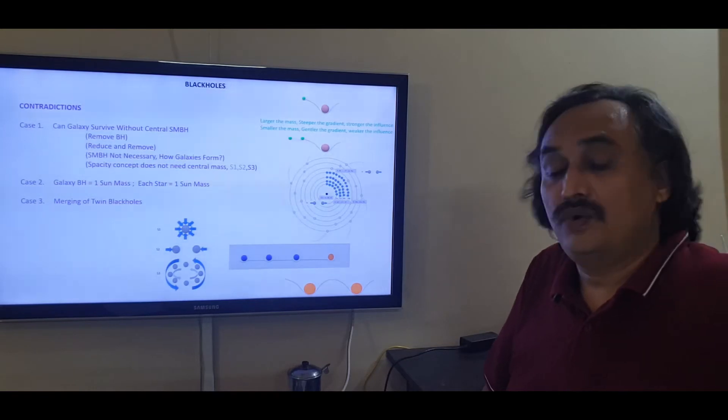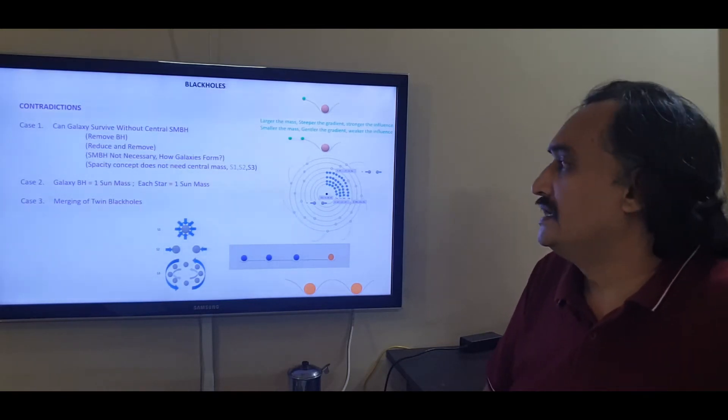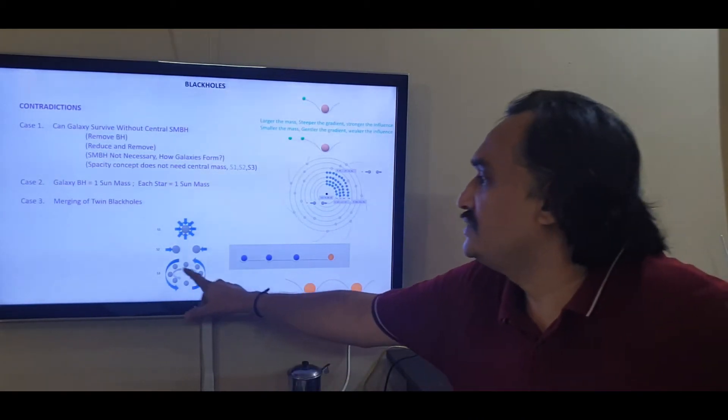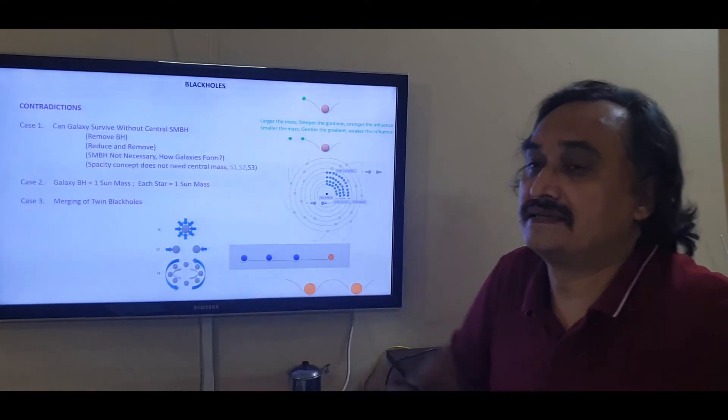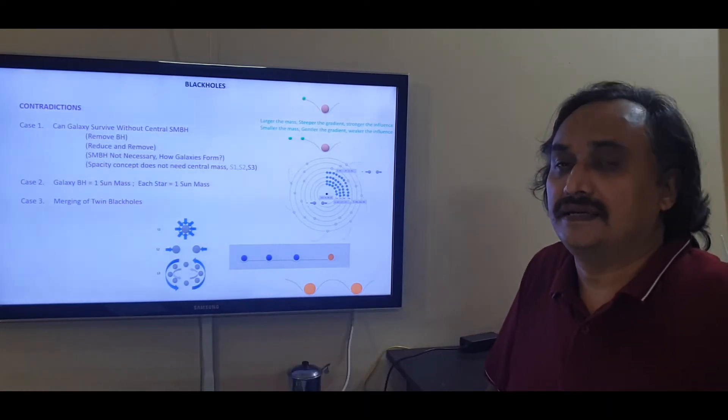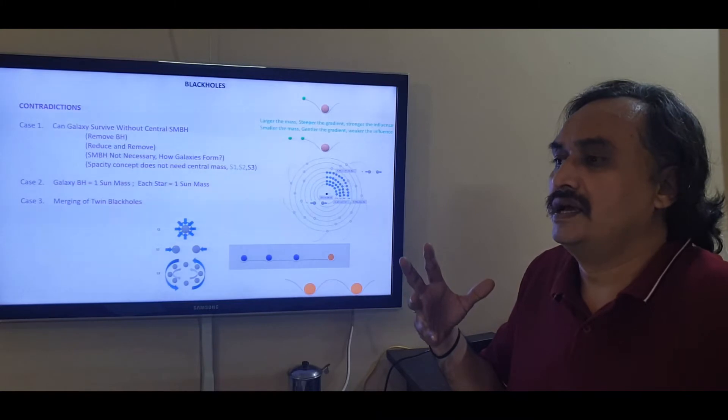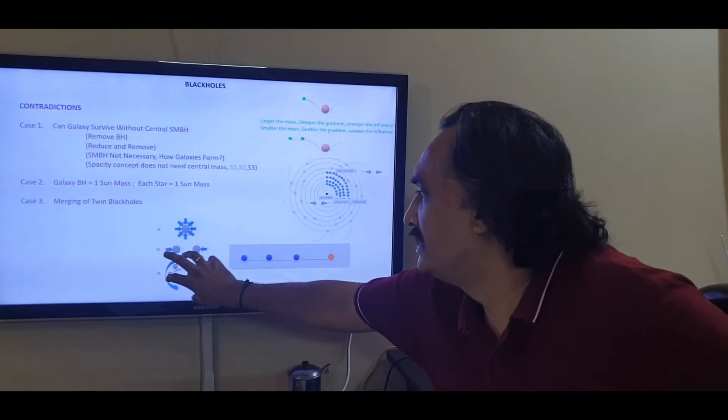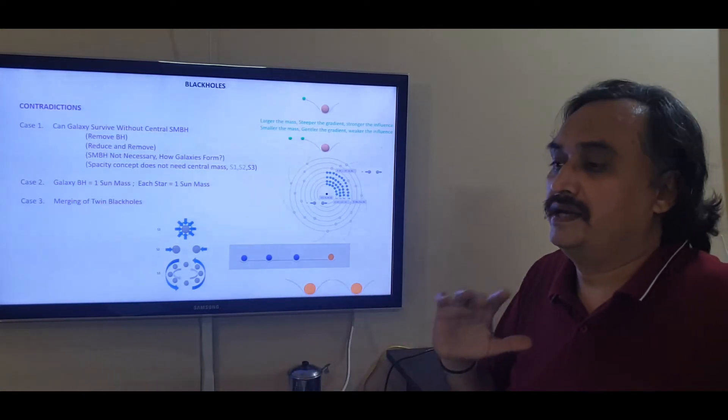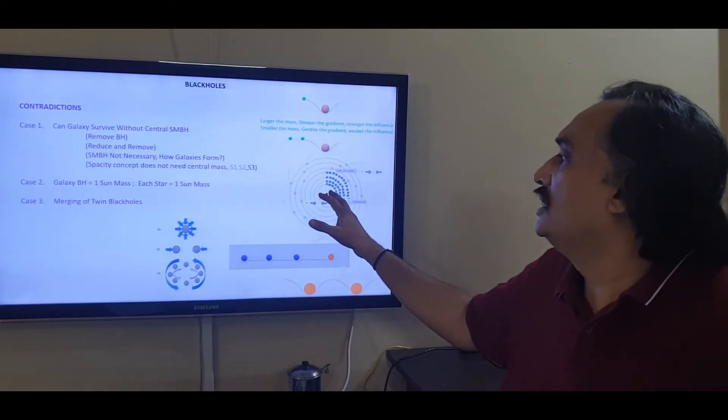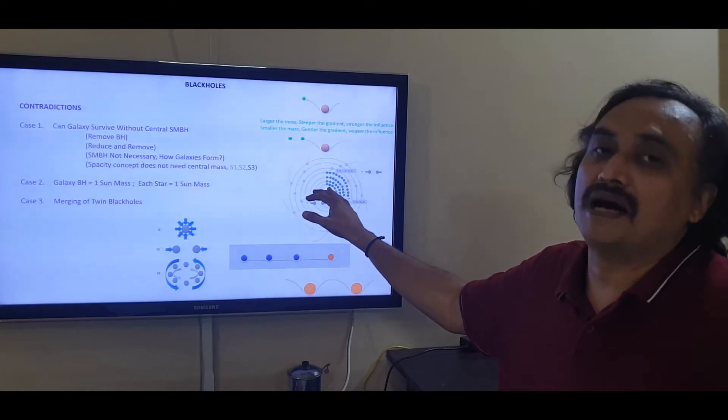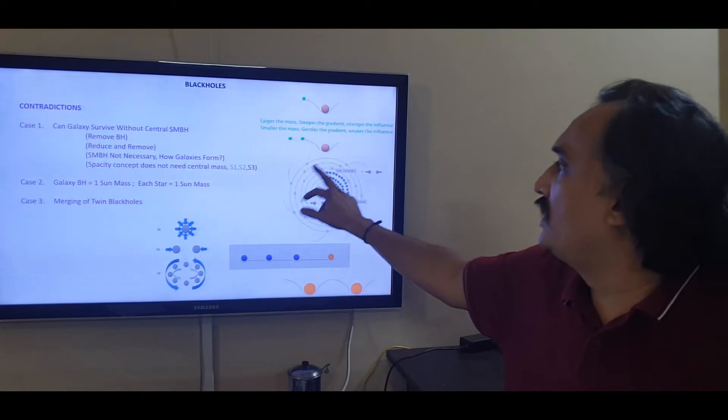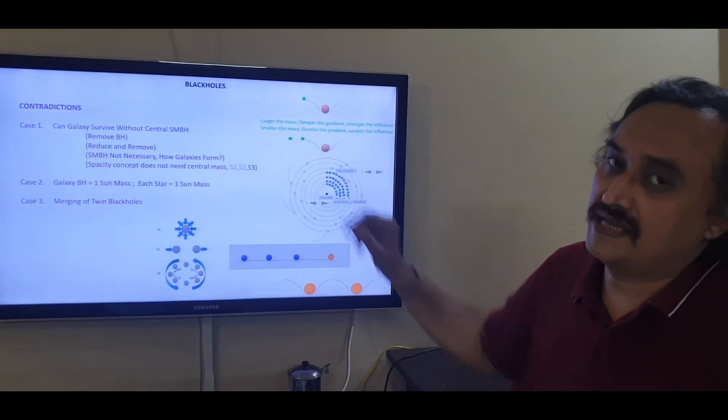And how does Space City take care of this? Space City fortunately has got S3. And as you can see, S3 does not need a mass at the center, whether it is supermassive or any mass. If it is there, it is good. If it is a supermassive mass, then the orbit reduces. But it does not depend on a central mass at all. If you remove this central mass, the S3 would keep these masses in orbit.